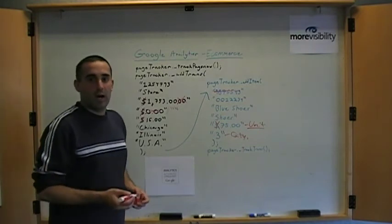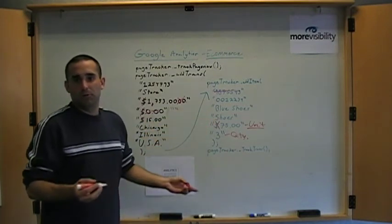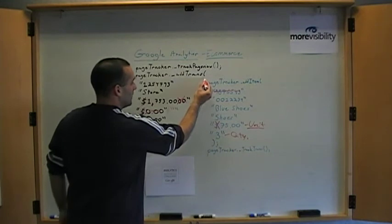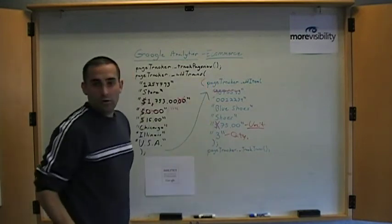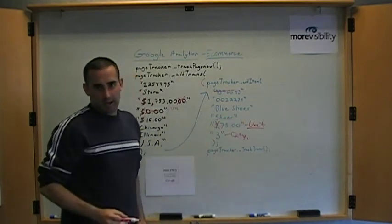One more thing to note: if you have different items in this particular purchase, so instead of this person buying blue shoes, they also bought a blue jacket or a set of pens, you want to use a different add item call. You want to just have that separated. You don't want to combine more than one item per add item call.